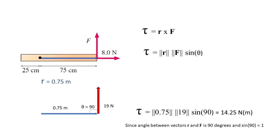Now we are going to compute the torque for the other force, force F equal to 19N. We see that R vector is 0.75 meters and F is equal to 19N but the theta between them is 90 degrees.